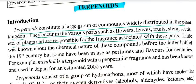In this chapter, we will discuss Terpenoids and its classification and extraction process. Terpenoids constitute a large group of compounds widely distributed in the plant kingdom. They occur in various parts such as flowers, leaves, fruits, stems, seeds, etc., and are responsible for the fragrance associated with these parts.